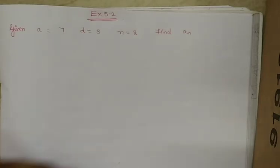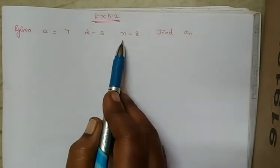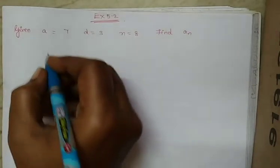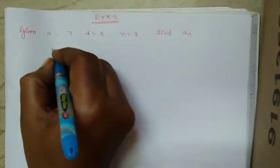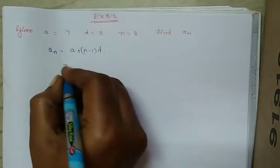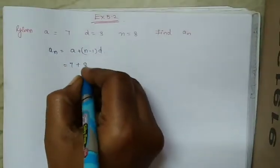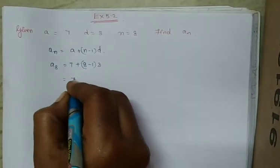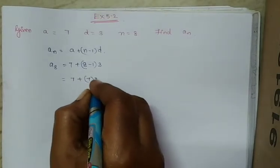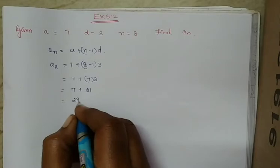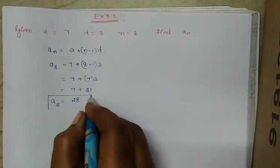Based on this, let us solve problems from Exercise 5.2. The first question: given A equals 7, D equals 3, N equals 8, find AN. Using the general term AN = A + (N−1)D, we get A8 = 7 + (8−1) × 3 = 7 + 7 × 3 = 7 + 21 = 28. So A8 is equal to 28.